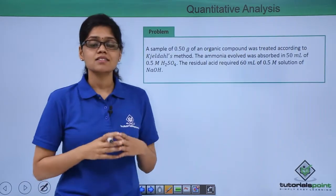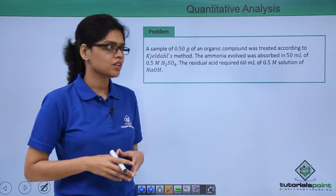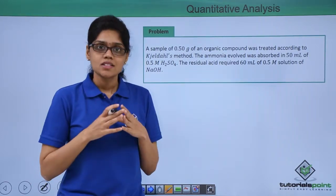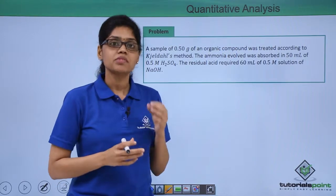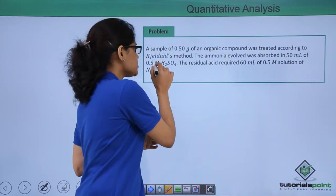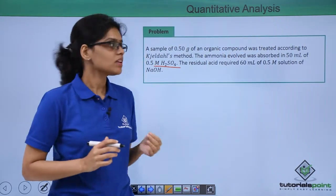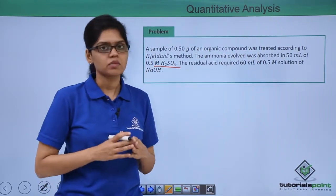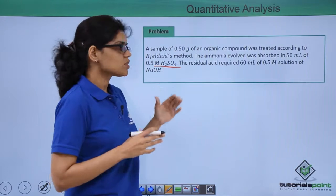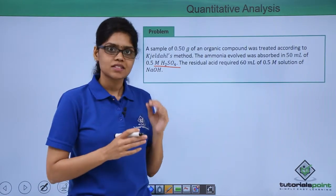The question given here is that a sample of 0.5 gram of organic compound was subjected to Kjeldahl's method and the ammonia evolved was absorbed in 50 ml of 0.5 molar sulfuric acid and the residual acid required 60 ml of 0.5 molar solution of sodium hydroxide. Let's try to solve this problem by attempting it step by step.